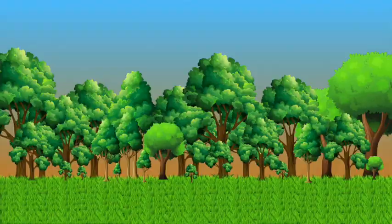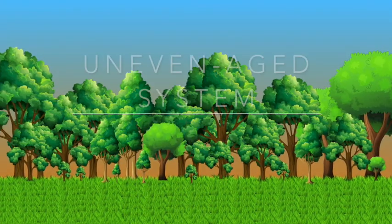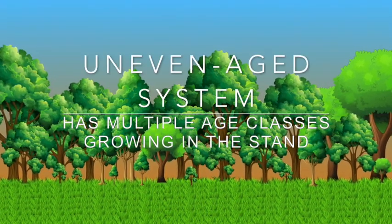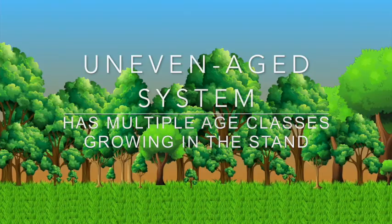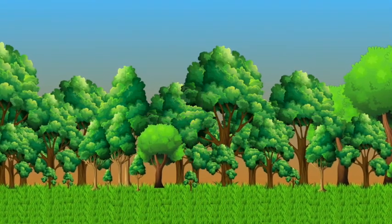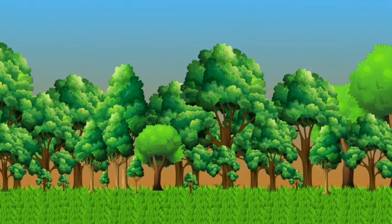Lastly, we have an uneven-aged system, which is generally characterized as having a lot of stand heterogeneity, structural heterogeneity, where there are multiple age classes from the canopy — the highest trees — all the way down, having midstory and understory trees. Every silvicultural system has three main components: regeneration, tending, and harvest.